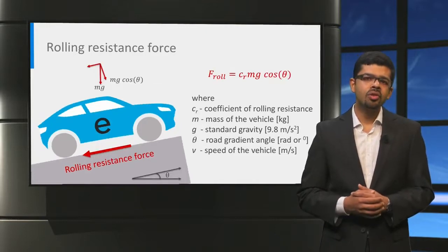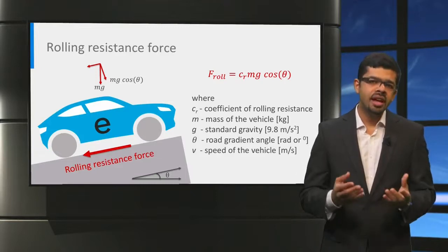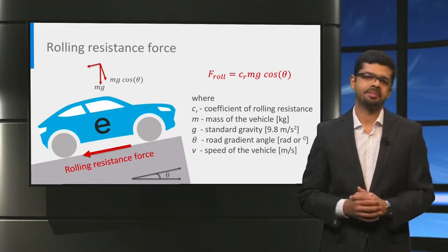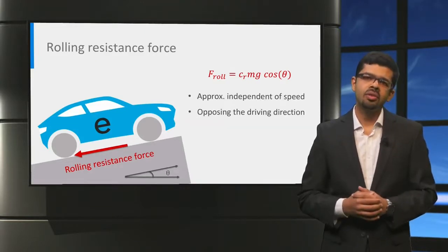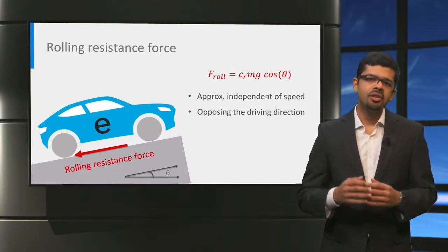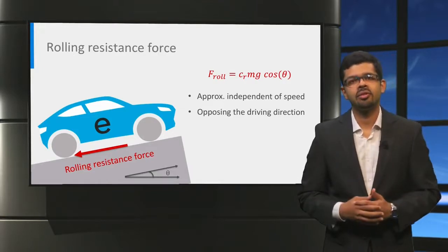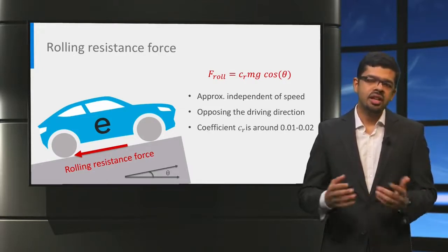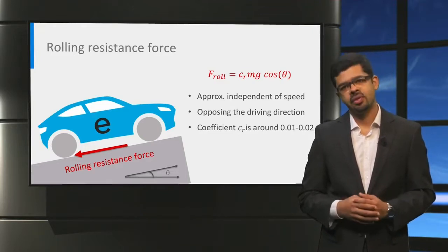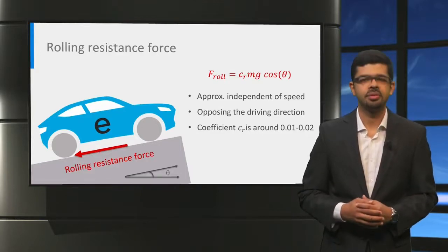In the case of a road with an inclination angle θ, the normal force becomes the weight mg multiplied by the cosine of the road angle θ. It is important to note that the rolling resistance force is independent of vehicle speed and always opposes the direction of motion. The coefficient Cr should be low to keep frictional losses low; for modern cars it is typically around 0.01 to 0.02.